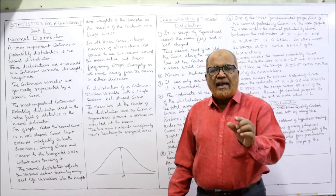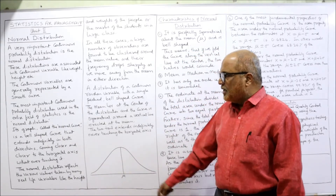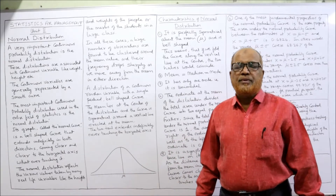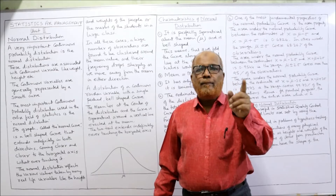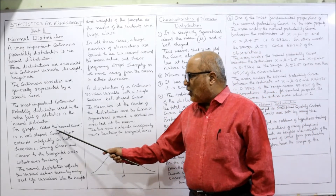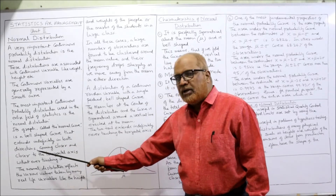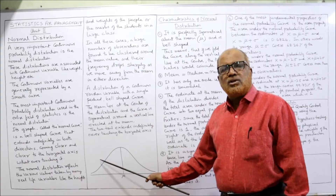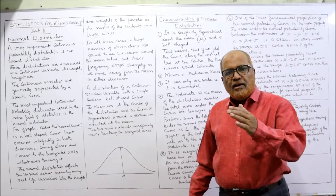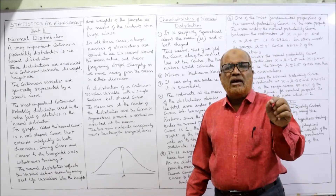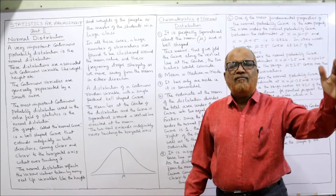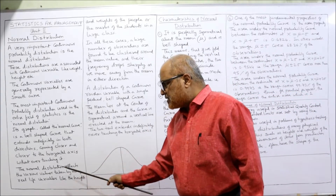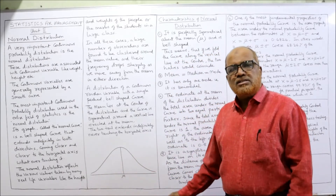Normal distribution is very important in many areas where values may take any form. Its graph, called the normal curve, is a bell-shaped curve. When you draw the normal distribution it will be a curve in a bell shape. The two tails — left tail and right tail — come closer and closer to the horizontal axis but never touch it; the curve extends indefinitely in both directions.